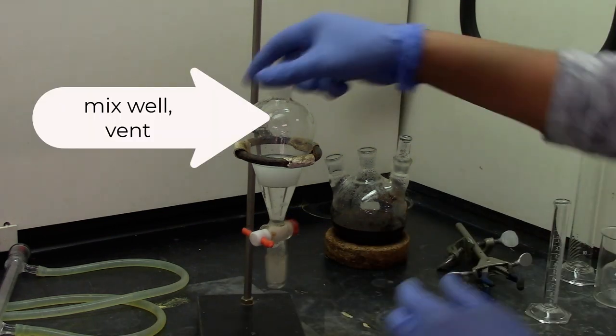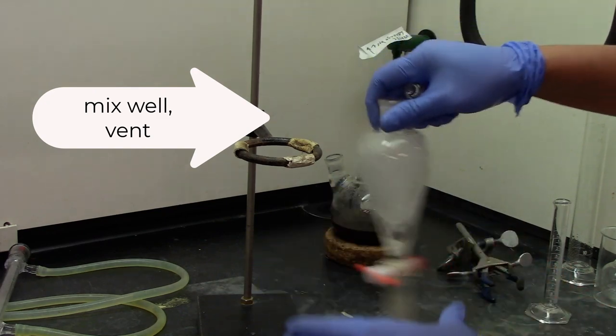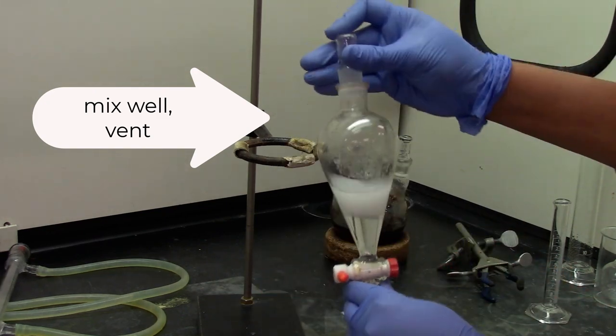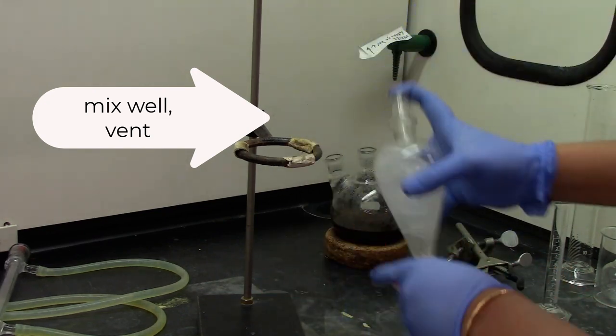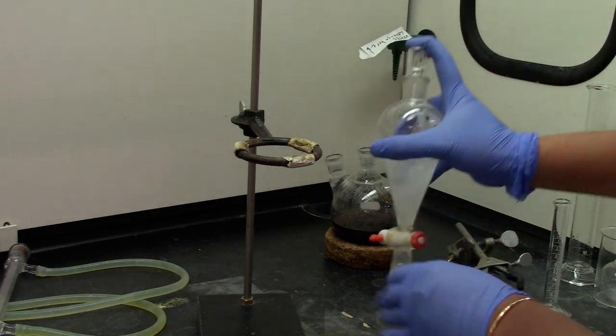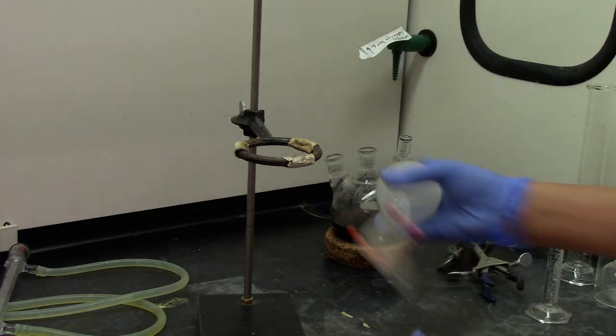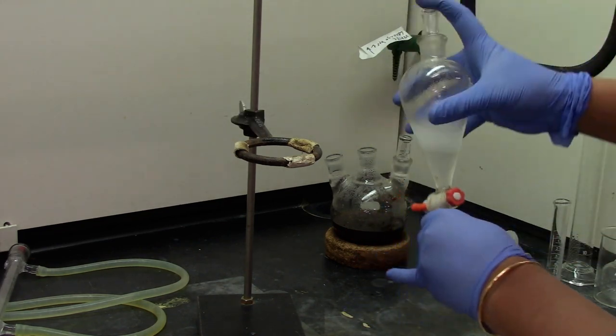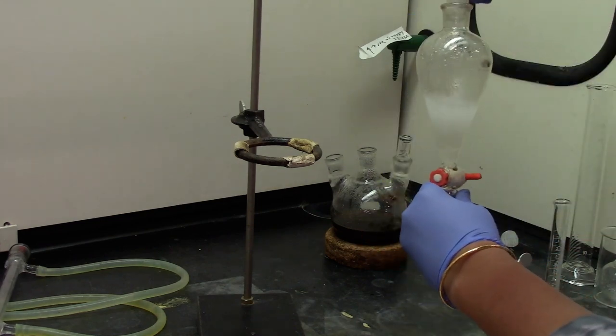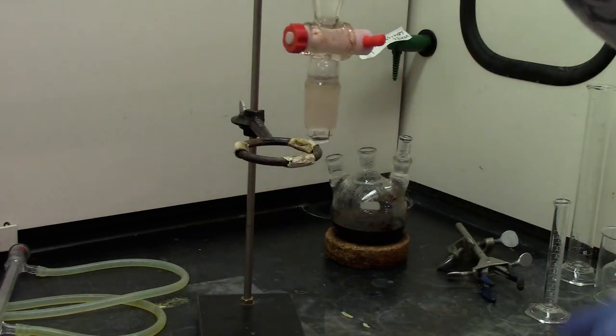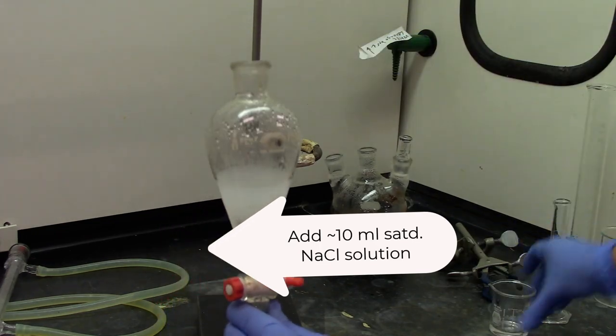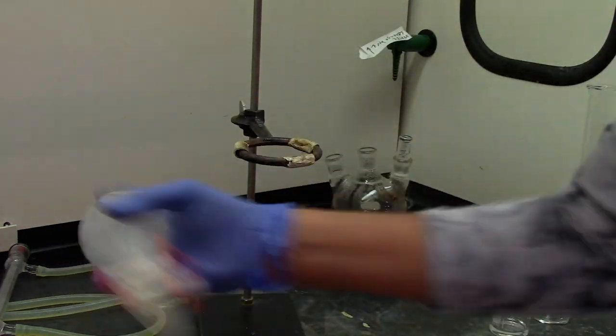Cap the separatory funnel and give it a good mix and vent. If you see an emulsion like here, both the layers are cloudy, go ahead and add about 5-10ml of saturated sodium chloride solution, which helps break the emulsion.